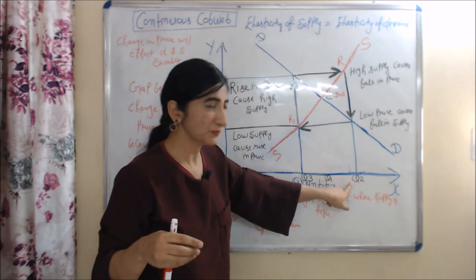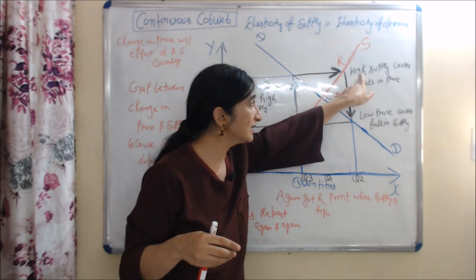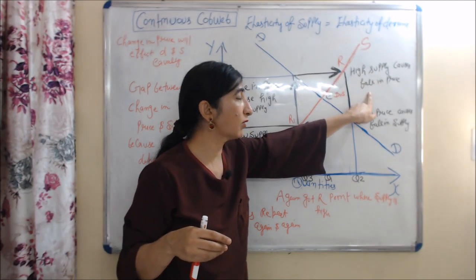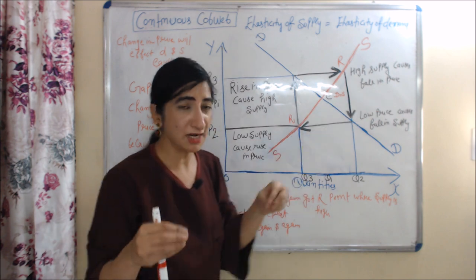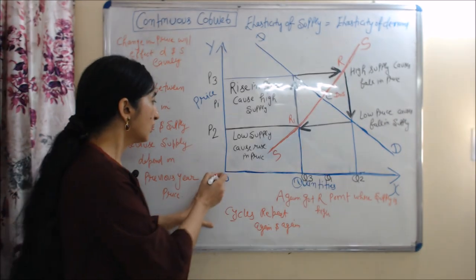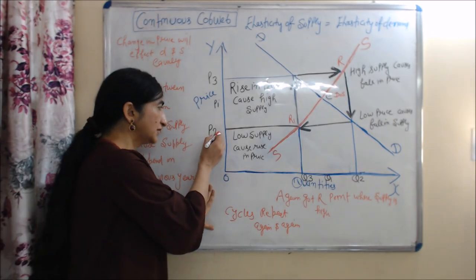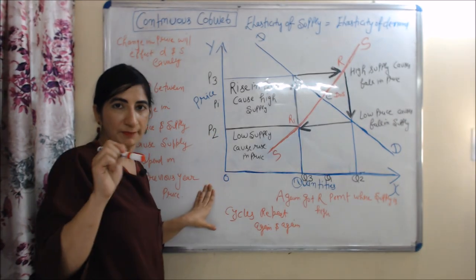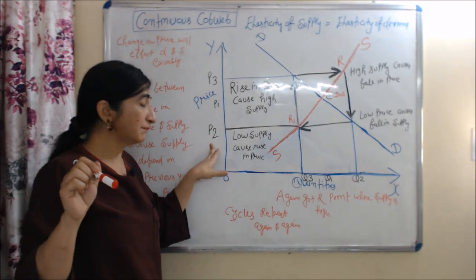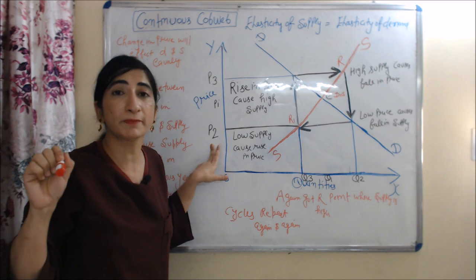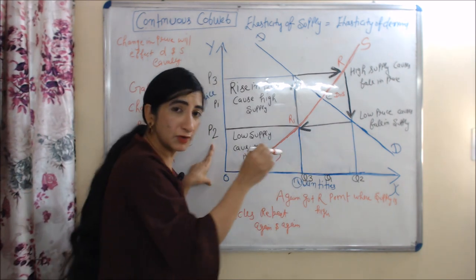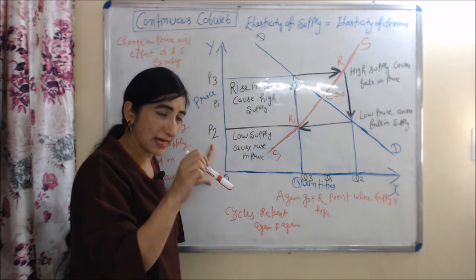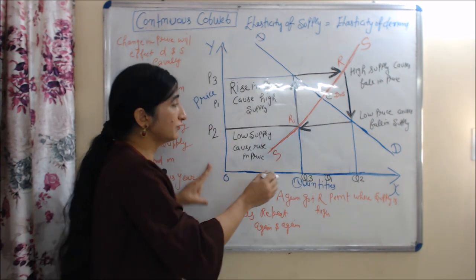Now we have a higher supply at Q2, and this high supply will cause a fall in price, and now we have a lower price OP2. This low price will cause a fall in supply.